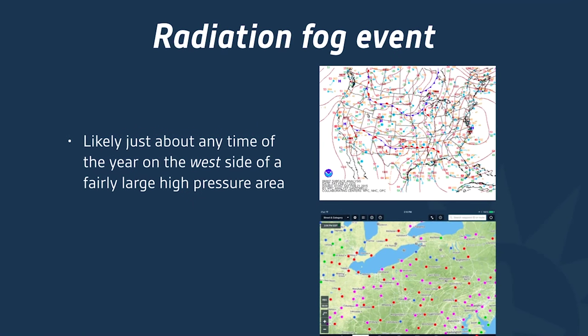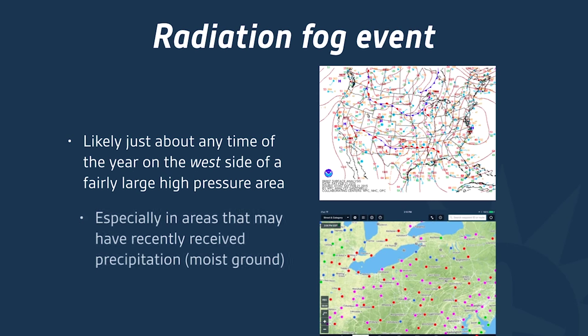Another classic event is radiation fog, which can occur just about any time of year, especially on the west side of a fairly large area of high pressure. High pressure areas are normally fair weather features, but in overnight hours with clear air and calm winds near the surface, radiational cooling can drop the temperature all the way down to the dew point, producing radiation fog. If it rained a day or two before and the ground is wet, those areas are more favorable for radiation fog.